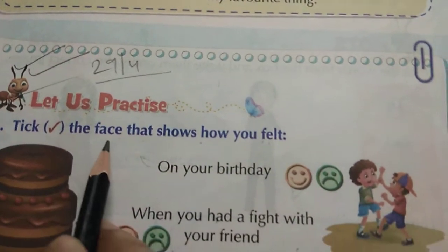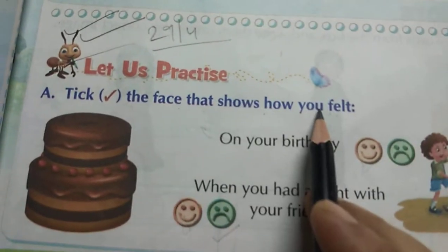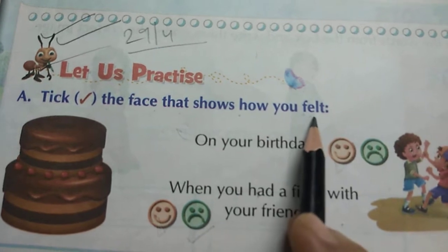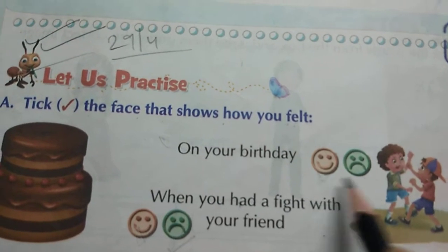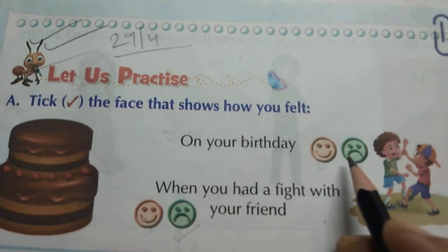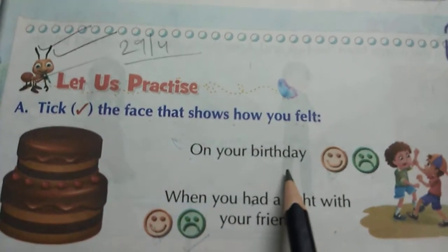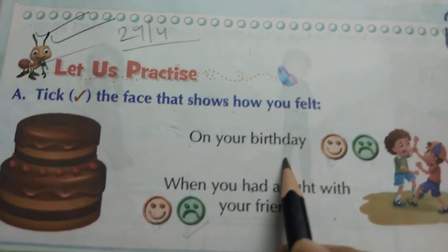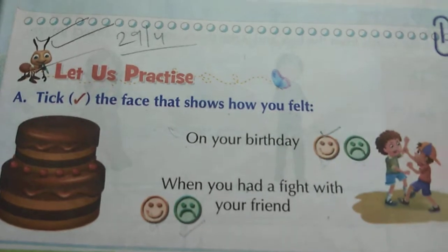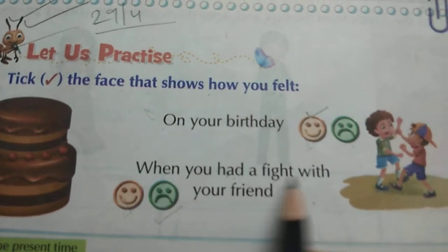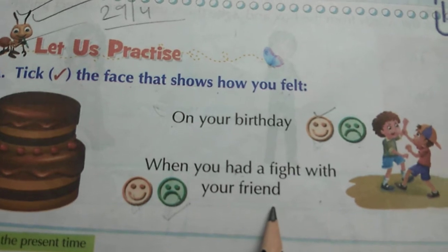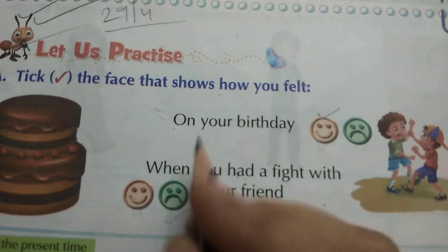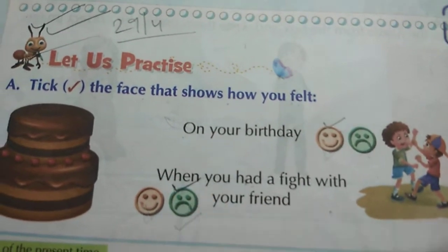Tick the face that shows how you feel. There are two faces: a happy face and a sad face. On your birthday, how did you feel? Happy — so tick mark happy. When you had a fight with your friend, how will you feel? Sad — so tick mark sad.